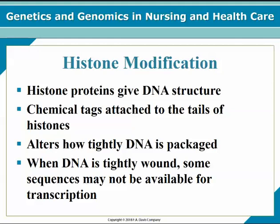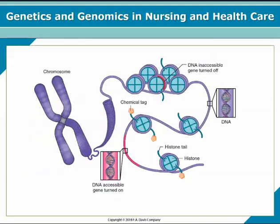Histone modifications involve proteins that give DNA its structure. Chemical tags attached to the tails of the histones alter how tightly the DNA is packaged. When the DNA is tightly wound, some sequences may not be available for transcription. In this graphic of histone modification, you can see that at the bottom the DNA is loosened and accessible, and therefore the gene is turned on.